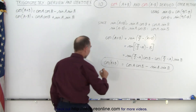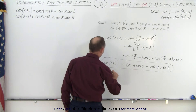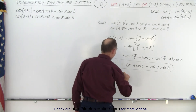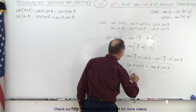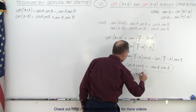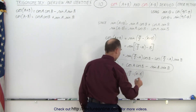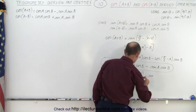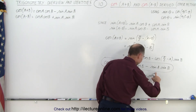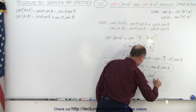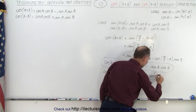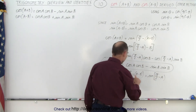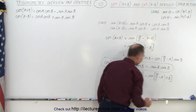We can also find the cosine of a minus b. That is equal to the sine of (pi over 2 minus a minus b), which we regroup — grouping pi over 2 minus a together — and a minus times a minus becomes plus b, giving us the sine of (pi over 2 minus a) plus b.